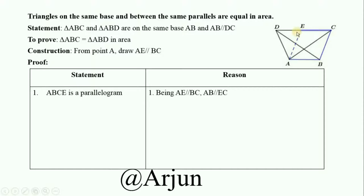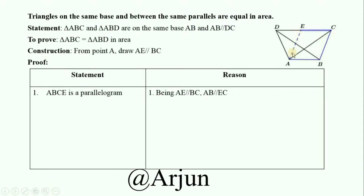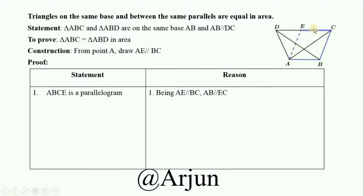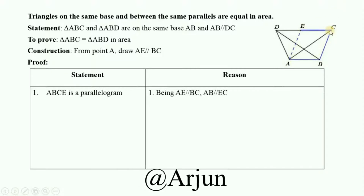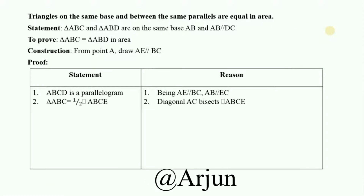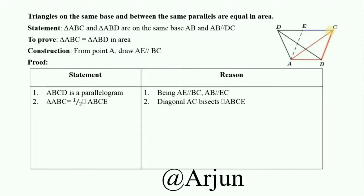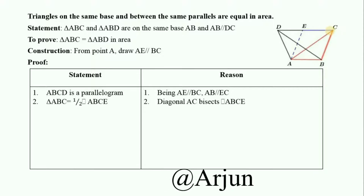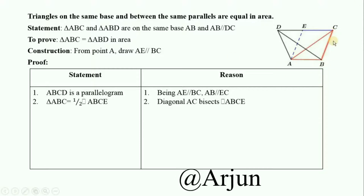First statement: AE is parallel to BC, and AB is parallel to EC. Since opposite sides are parallel to each other, ABCE is a parallelogram. Second statement: triangle ABC is equal to half of parallelogram ABCE.